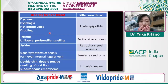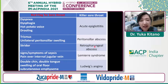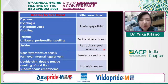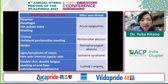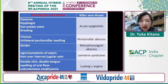In peritonsillar abscess, patients may have trismus, difficulty opening their mouth, or unilateral peritonsillar swelling. In retropharyngeal abscess, it may lack specific signs or symptoms, so it is important to have a high index of suspicion; patients may have stridor. In Lemierre syndrome — septic thrombophlebitis of the internal jugular vein — patients may have signs or symptoms of sepsis and pain over the internal jugular vein. In Ludwig's angina — oral floor tissue cellulitis — patients may have swelling around the chin or tongue, presenting as a double chin or double tongue, swelling of the oral floor tissue, or subcutaneous emphysema in that area.